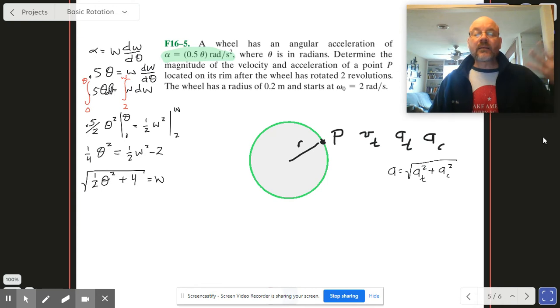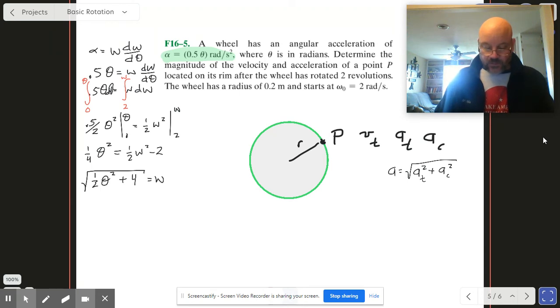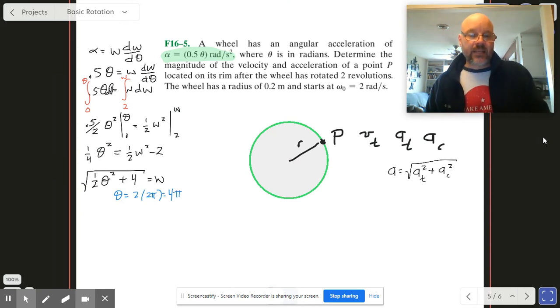Once I have that, I just plug in my value for theta. And then I have omega. So just remember that theta, it's in revolutions again. So I've got to go 2 by 2 pi to get 4 pi once I plug in and I get my value for omega.